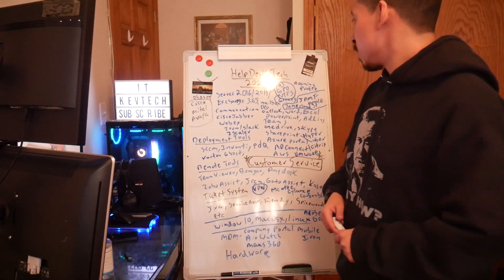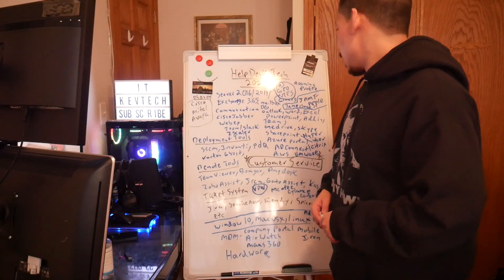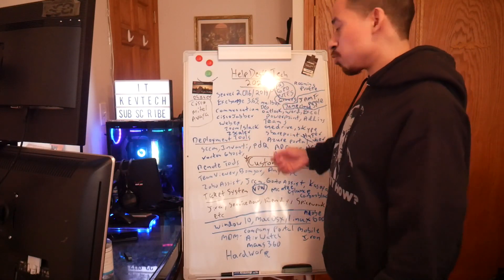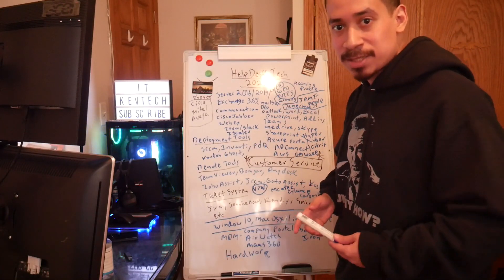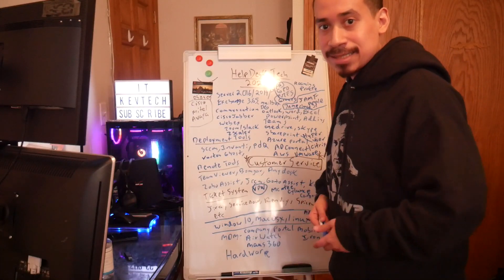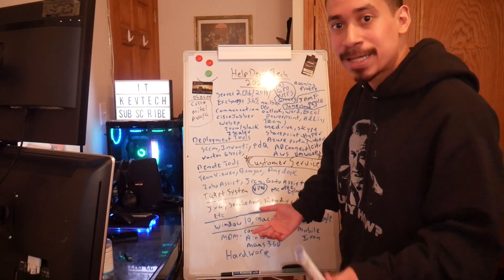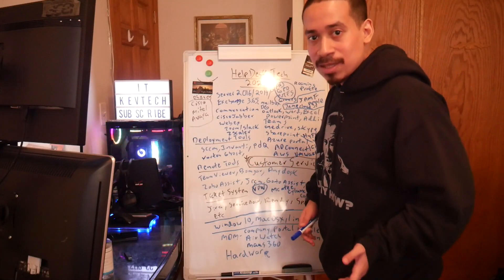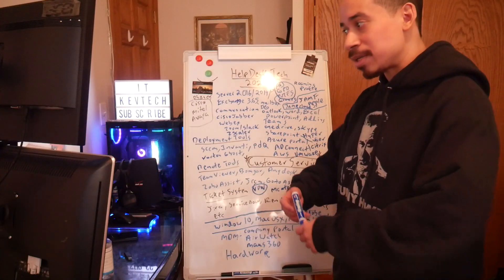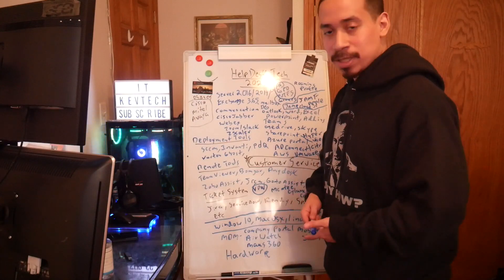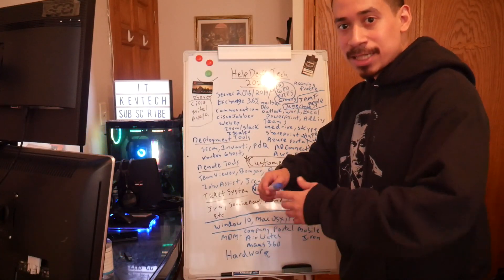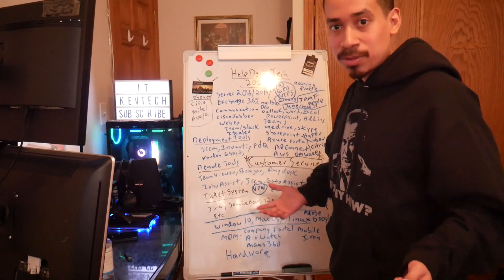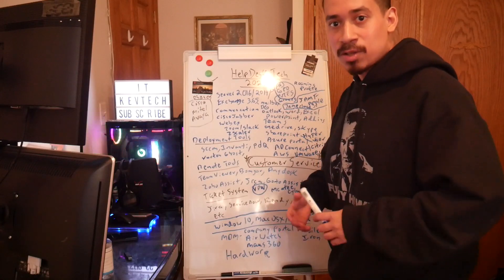So Server 2016, 2019 — you may see those depending on where you work. When you do help desk, you have to understand what Active Directory is, what Group Policy is, what NTFS is, what security groups are. Some companies may require you to add someone to a security group whether they need access to a shared drive, a folder, or for VPN to work. This is why you need to understand creating labs at home — download VirtualBox, download VMware, and make your own lab to practice Active Directory, servers, and Windows 10.